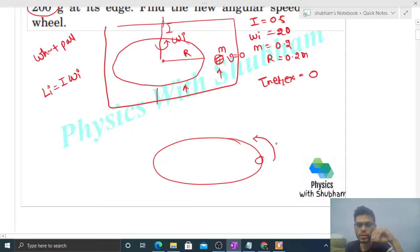Now finally what will happen is the wheel and the particle will move with a common angular speed, let's say omega final. At this time the angular momentum will be simply (I + mr²), that is the moment of inertia, into omega final. This is your final angular momentum.